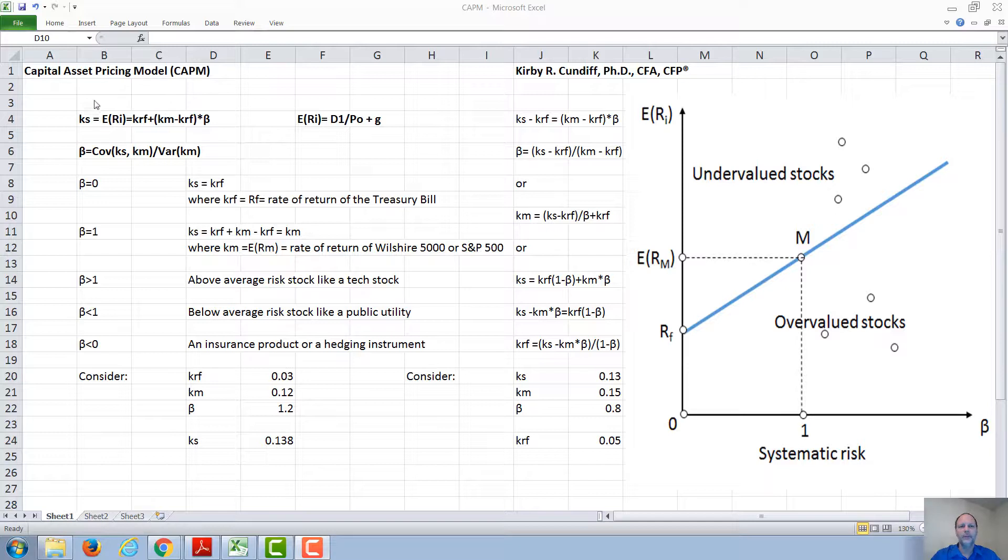Under the capital asset pricing model, the rate of return of a security is the risk-free rate plus the market risk premium, which is the difference between the rate of return on the market and the risk-free rate times beta.